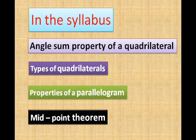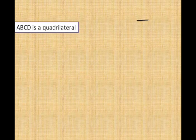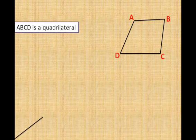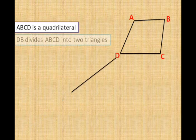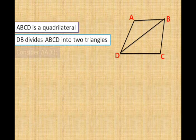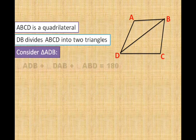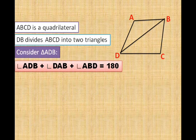We take quadrilateral ABCD. The diagonal DB divides this quadrilateral into two triangles. First, we consider the top one, triangle ADB. Applying the angle sum property, the sum of the three angles is 180 degrees.